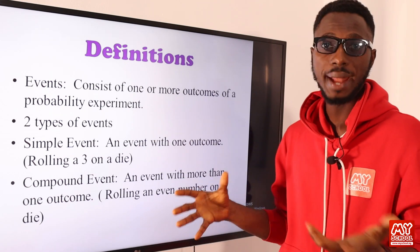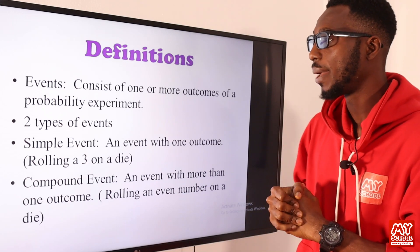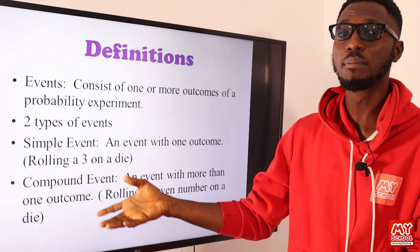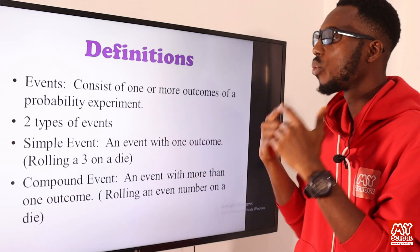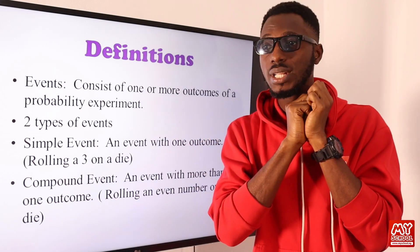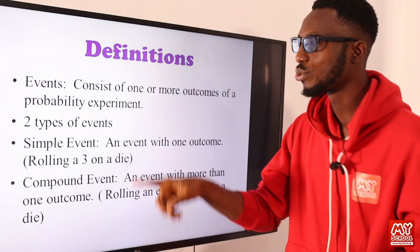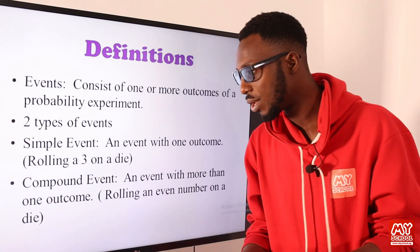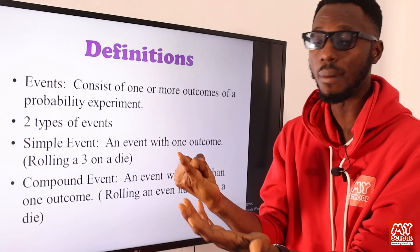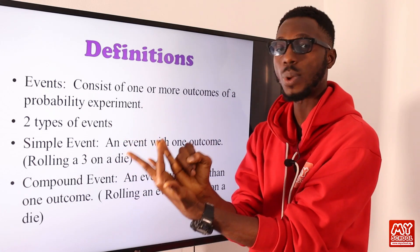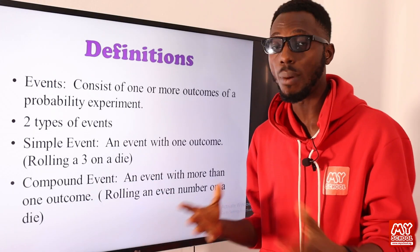An event consists of one or more outcomes of a probability experiment. We have two types of events here. A simple event — also called an elementary event — is an event with just one outcome. For example, rolling a 3 on a die when rolled just once. A compound event is an event with more than one outcome. For example, rolling an even number on a die: the even numbers are 2, 4, and 6 — so we have more than one outcome, making it definitely a compound event.